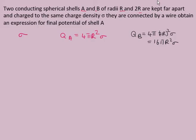After charging them, we connect them by a wire. When connected by a wire, we know that their potentials will become equal. The charges will redistribute, and after that their potential will be the same — so VA equals VB after connecting.